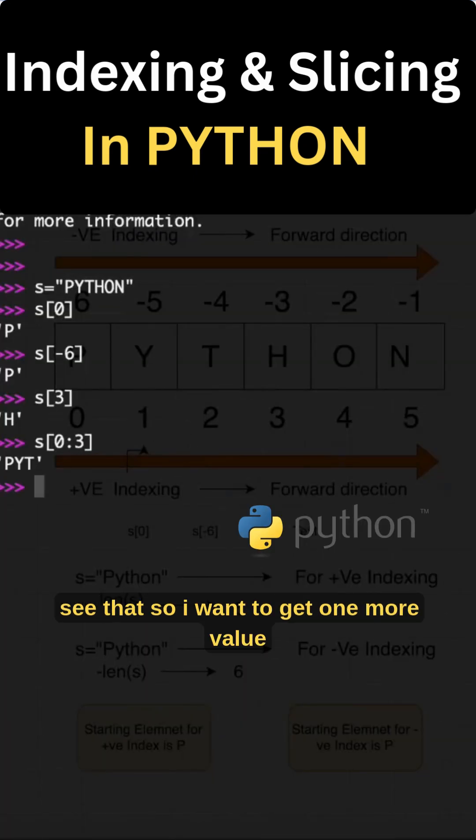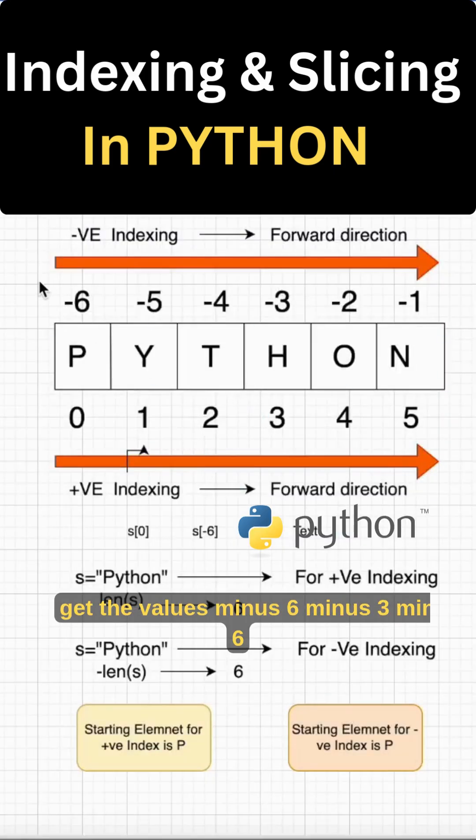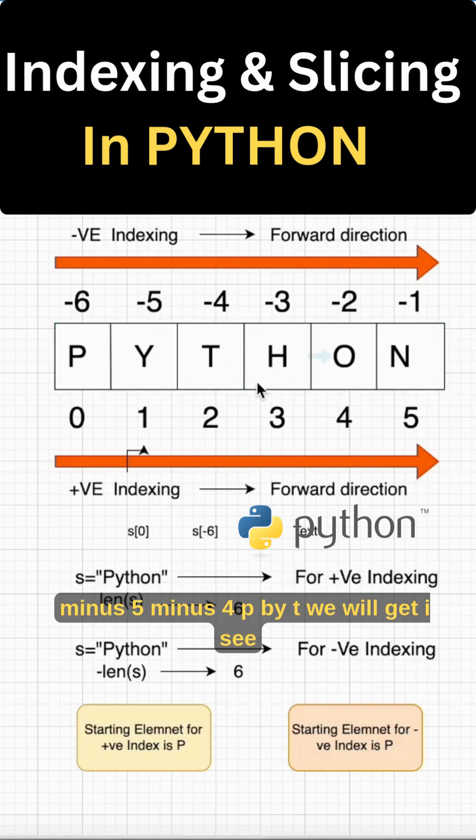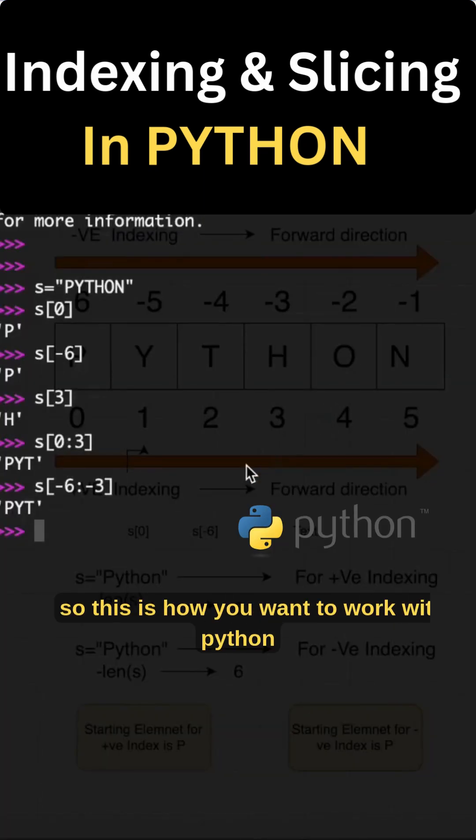I want to get one more value for negative indexing. Suppose minus 6 colon minus 3. So within that range we will get the values minus 6, minus 5, minus 4: P, Y, T. We will get it. See, this is how you work with Python indexing and slicing.